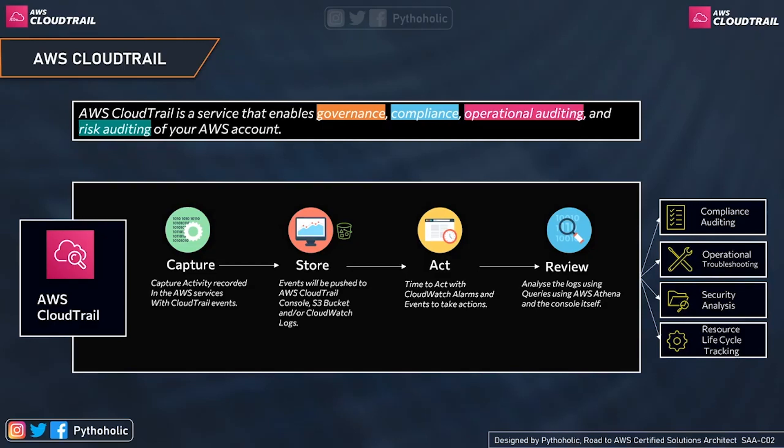To put all of the above in a more formal way: AWS CloudTrail is a service that enables governance, compliance, operational auditing, and risk auditing of your AWS account.